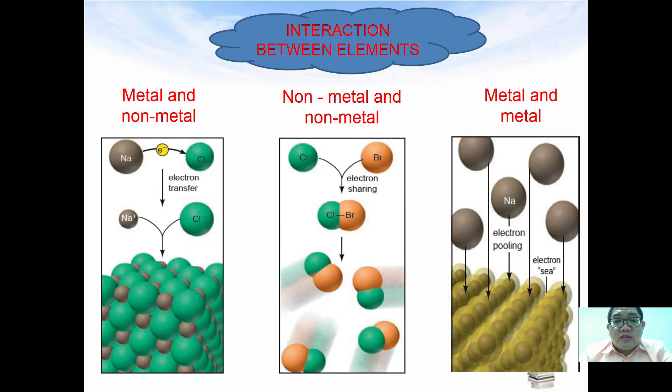Generally inside a periodic table there are three possible interactions between elements: interactions between metals and non-metals, interactions between non-metals and non-metals, and interactions between metals and metals. Most of the interaction between metals and non-metals involve the transfer of electrons to the other non-metal atoms.